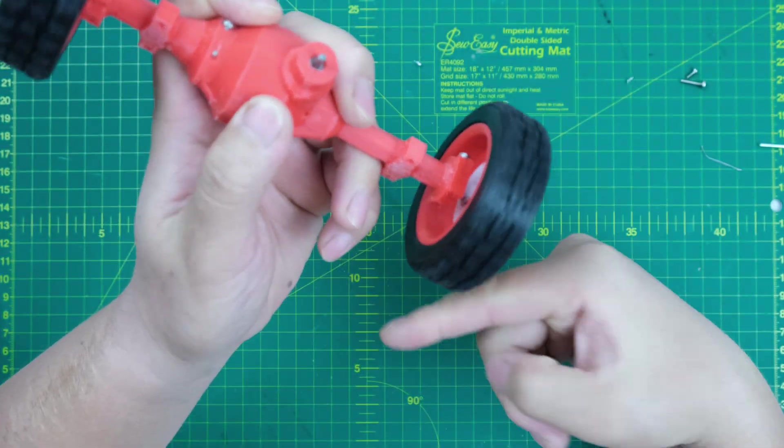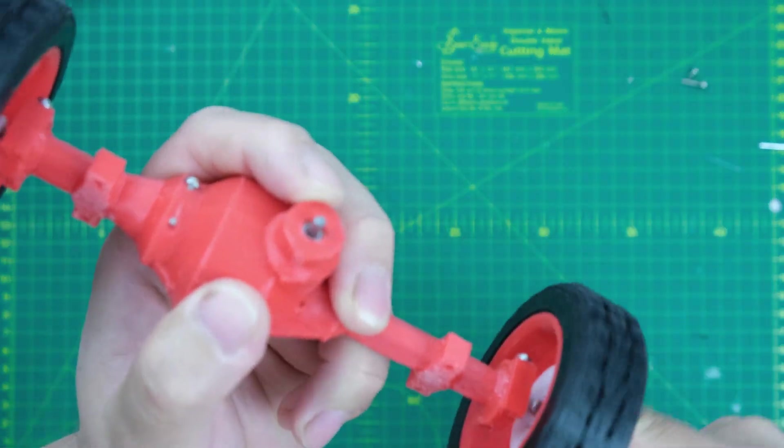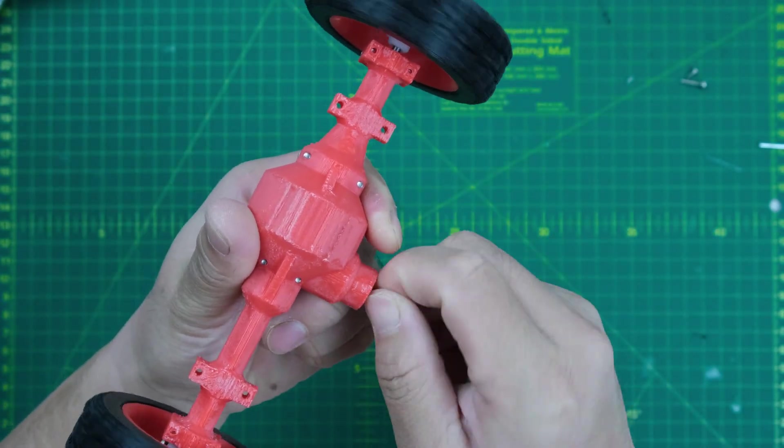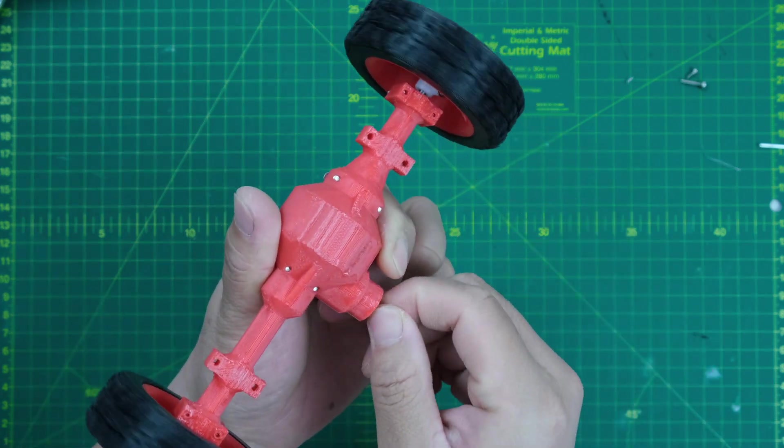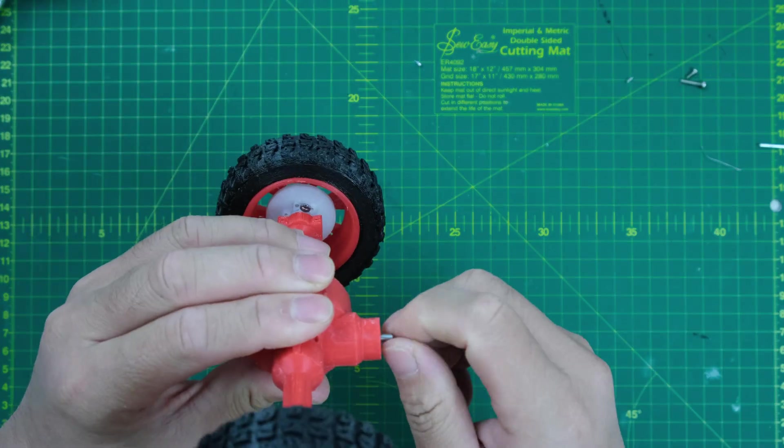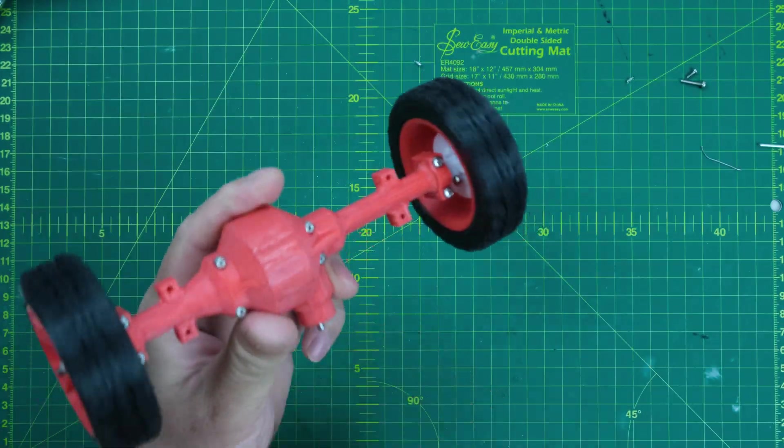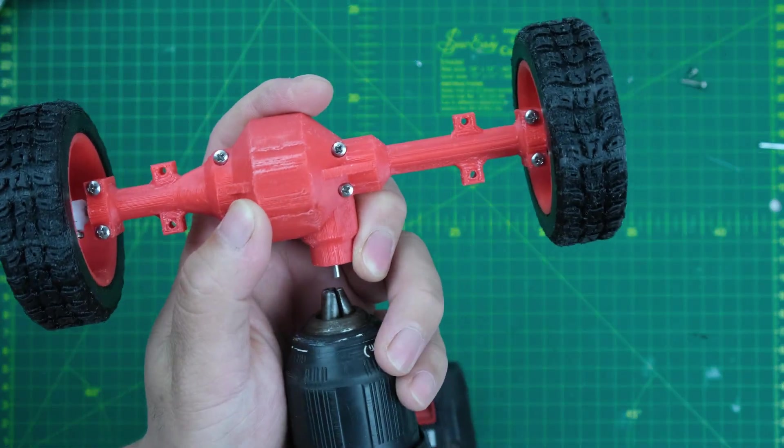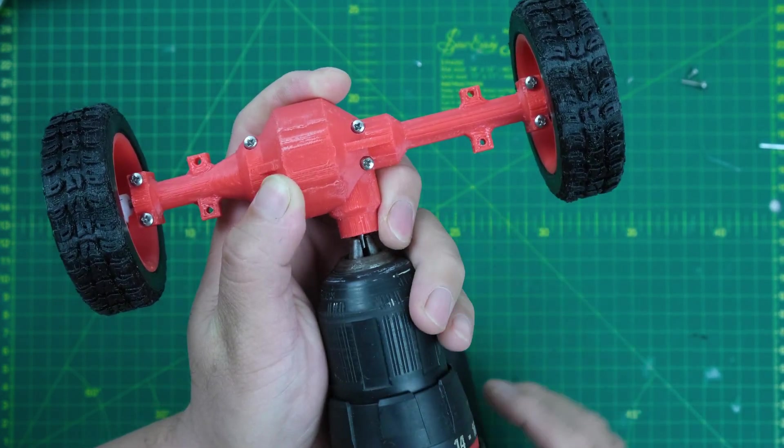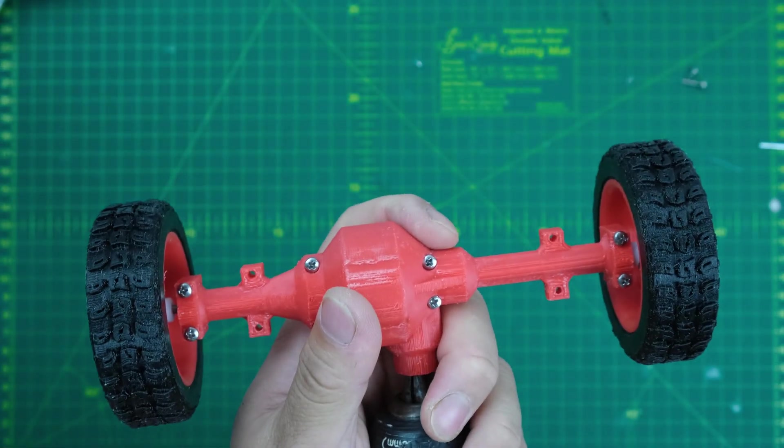If I just spin the wheel by finger, the driver shaft is spinning. And also, if I just spin the wheel, both sides of the wheel are spinning too. So I think the system is working. Now I'm gonna do one more test. I'm gonna put the rear axle onto the drill and let's see what's gonna happen.